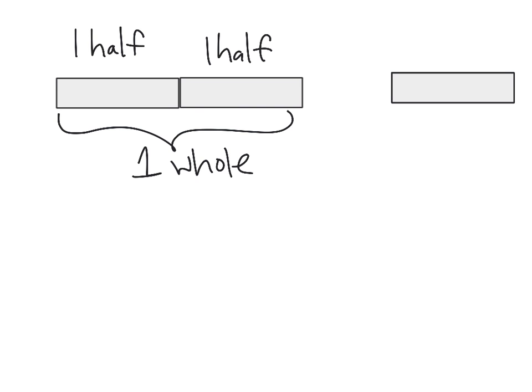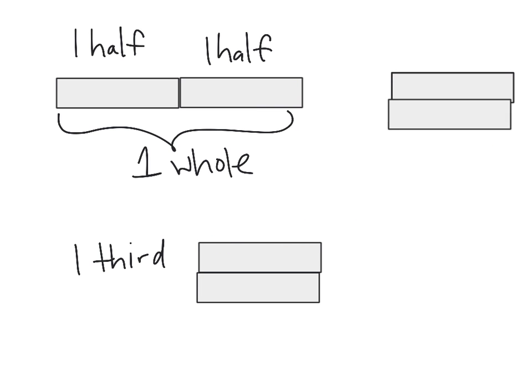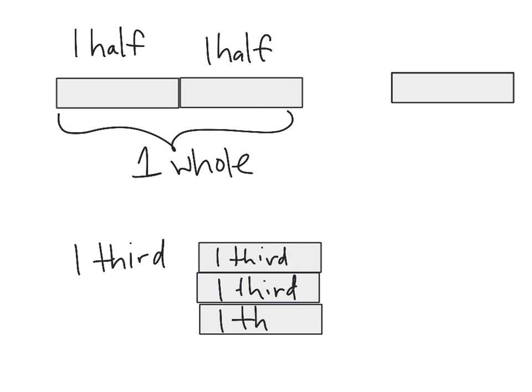All right, same idea with thirds. So let's say I take this, and I say, okay, this is one-third. Okay, well, if that's one-third, what does one whole look like? Well, we know we need three of them. One, two, three. So the idea would be, this is one-third, and this is one-third, and so together, all three of those is one whole.